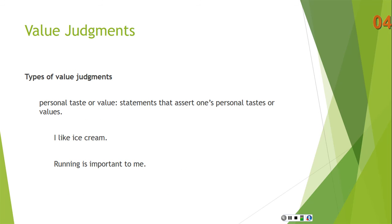There are different types of value judgments. First, judgments of personal taste or value: these statements assert one's personal tastes or values. So, I like ice cream; running is important to me. You're saying something about what you value, about what your personal tastes are. You're not making any sort of claim about other people. I might like running, but I'm not claiming you have to like running. I might like ice cream, but I'm not claiming that you have to like ice cream. So there are value judgments that are based purely on personal taste or value.